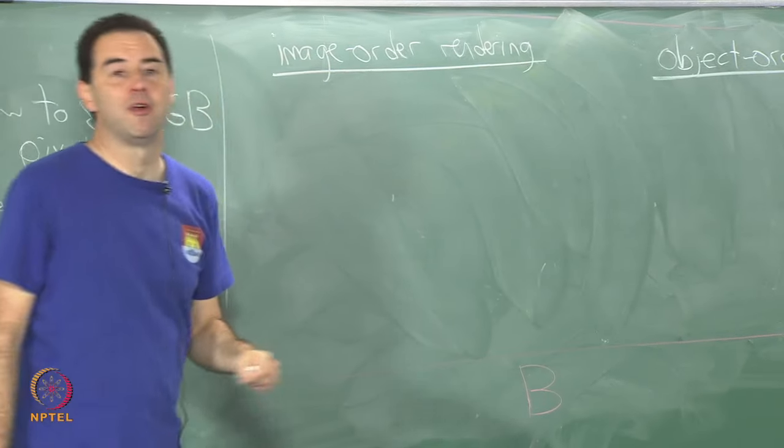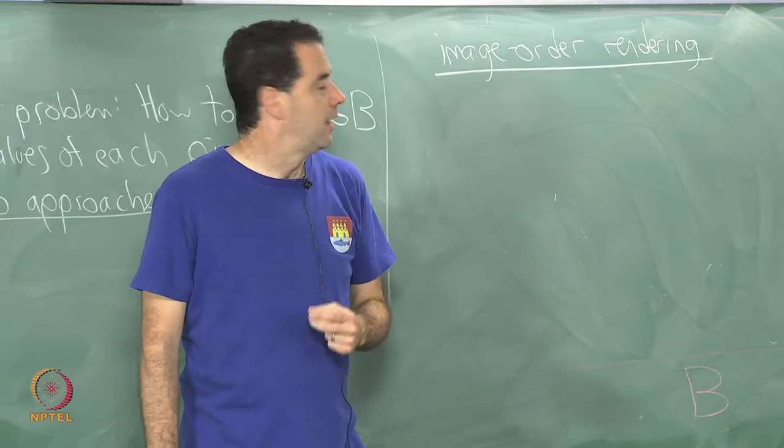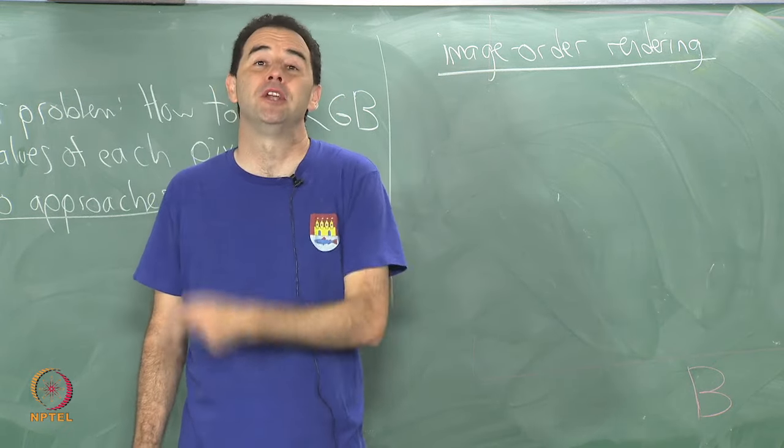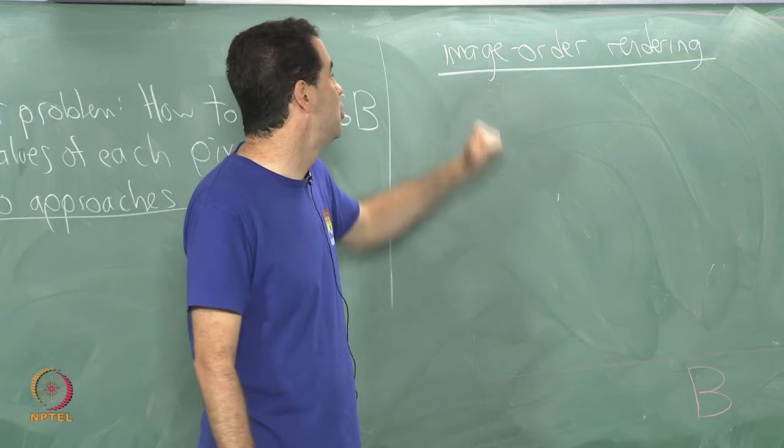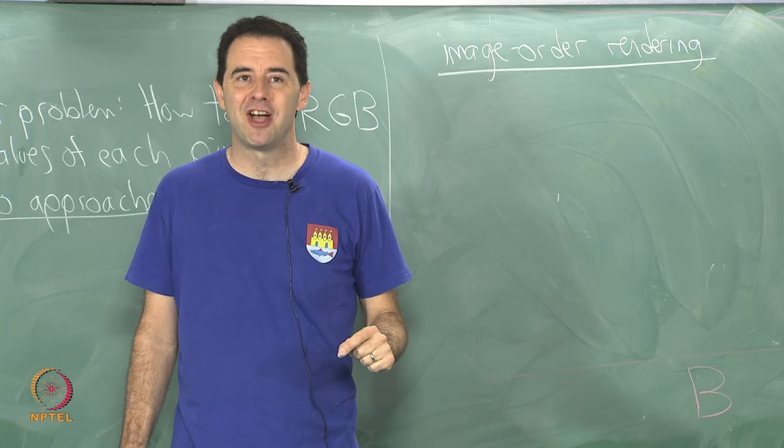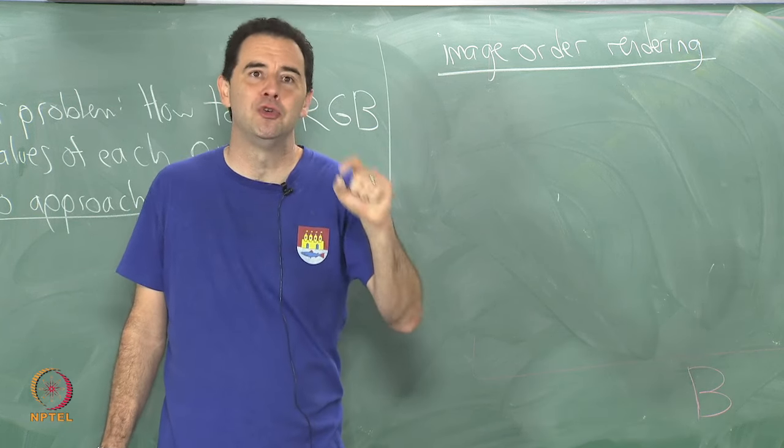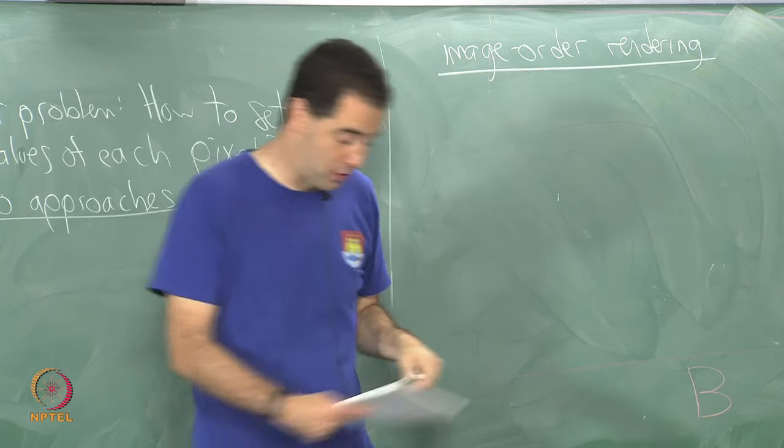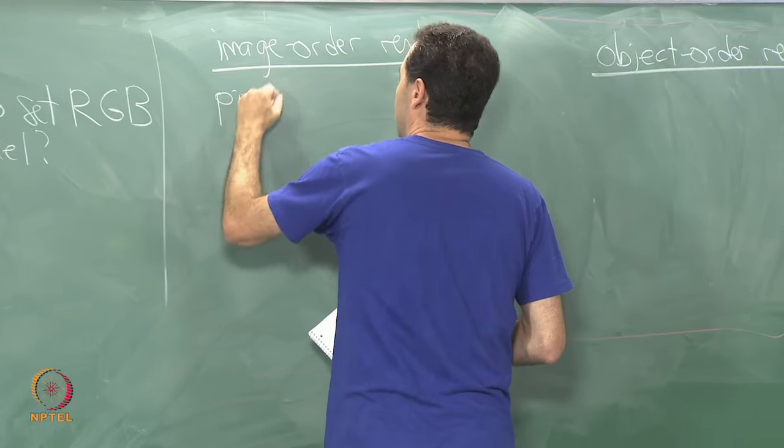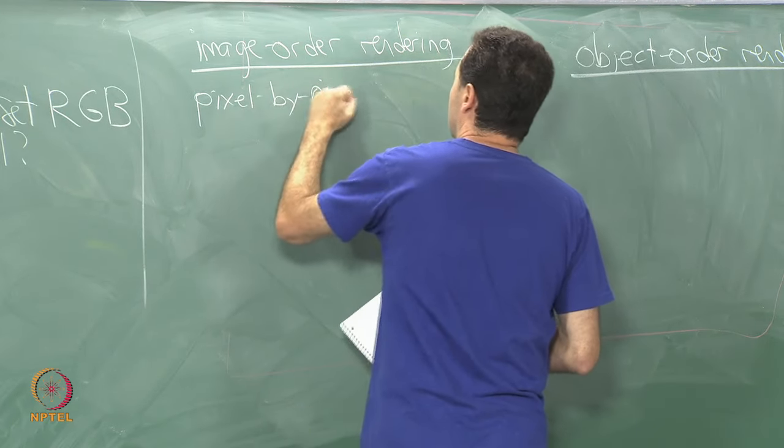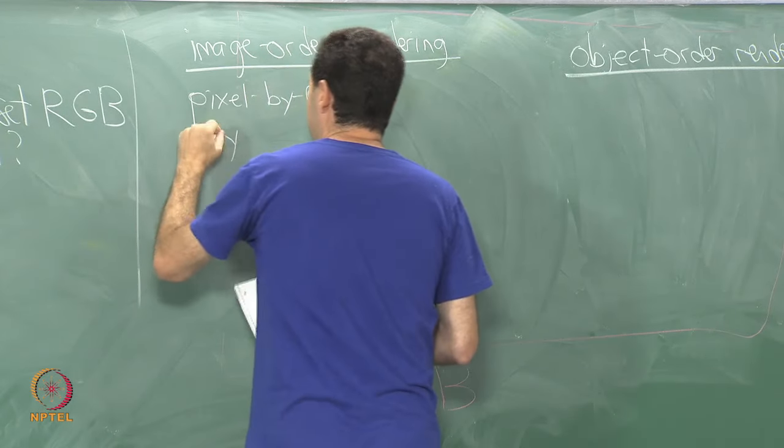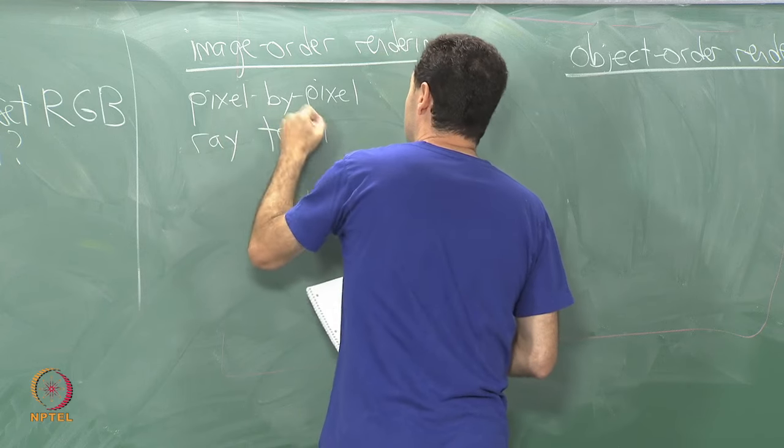So in image order rendering, and I should say to make the distinction between the two of these, you have to think about what the outermost loop is going to do in the computations. So the outermost loop in image order rendering is to go pixel by pixel. So it is for all pixels, and then inside of that I figure out how to color that particular pixel by doing a bunch of work. So this is going to be pixel by pixel. The main method inside of this is called ray tracing.